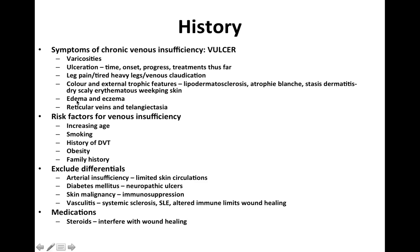A stands for additional features such as oedema, eczema, reticular veins, and telangiectasias. Risk factors for venous insufficiency include increasing age, smoking, history of deep vein thrombosis — either due to pelvic surgeries or thrombophilic disorders — and obesity, which increases abdominal weight and venous hypertension.